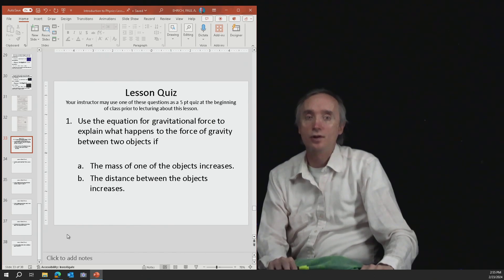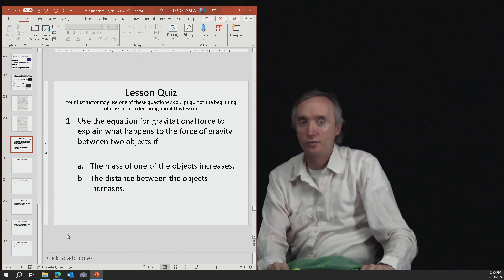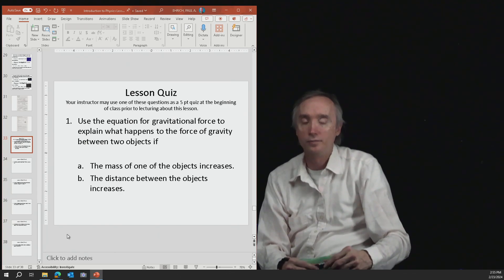So question number one, use the equation for gravitational force to explain what happens to the force of gravity between two objects if A, the mass of one of them increases.